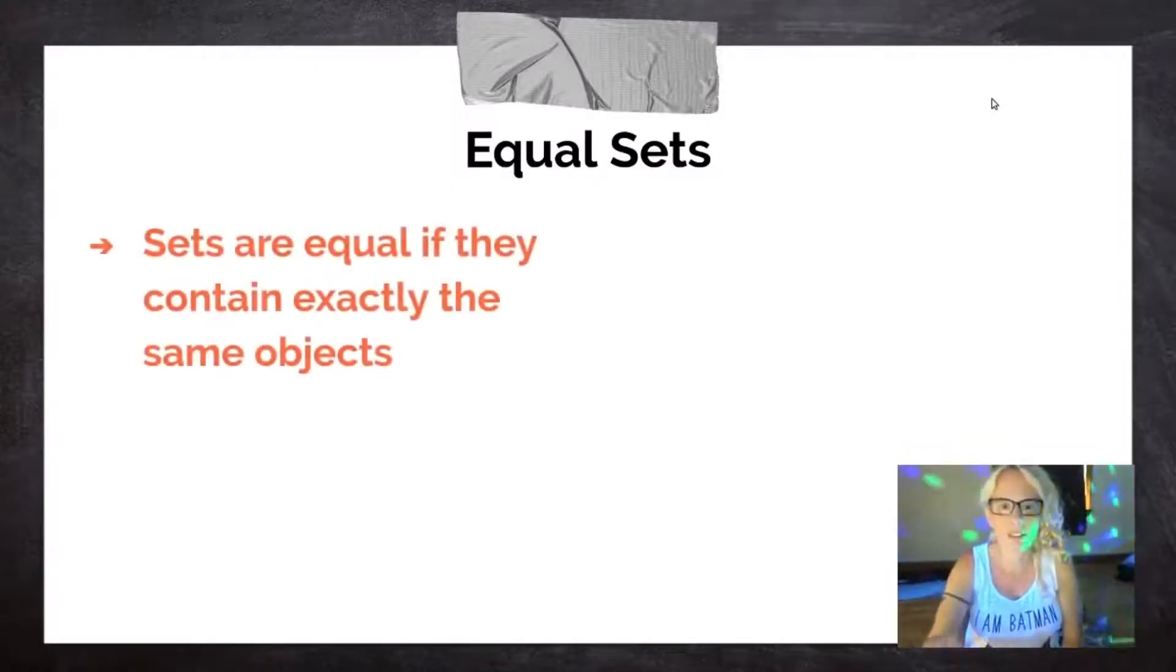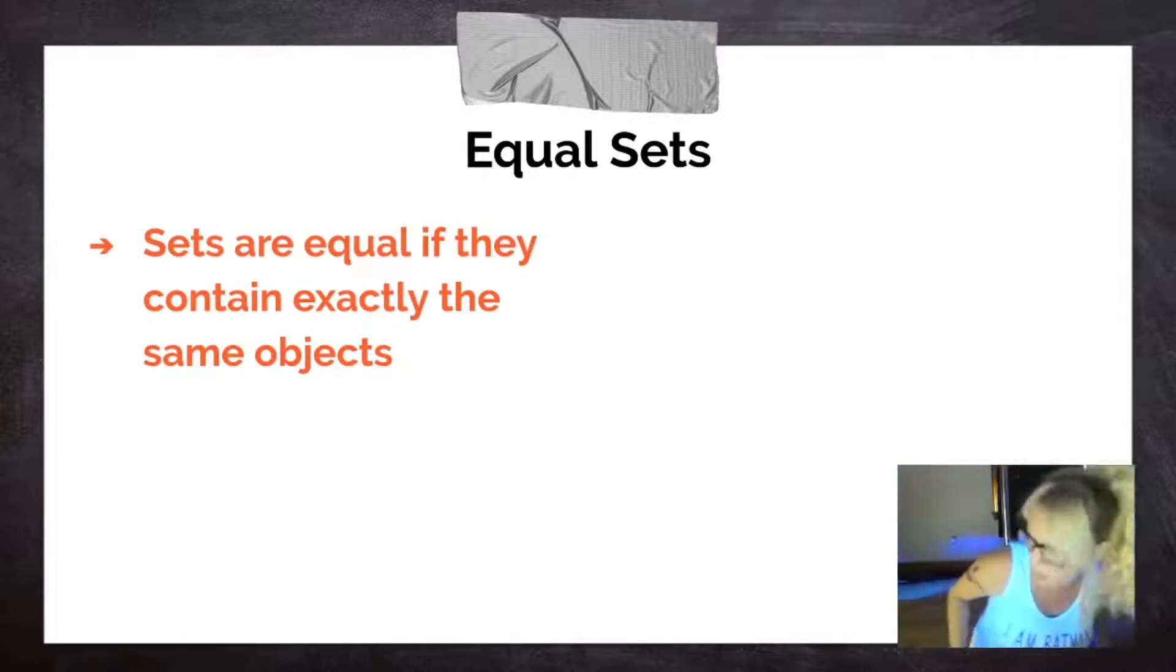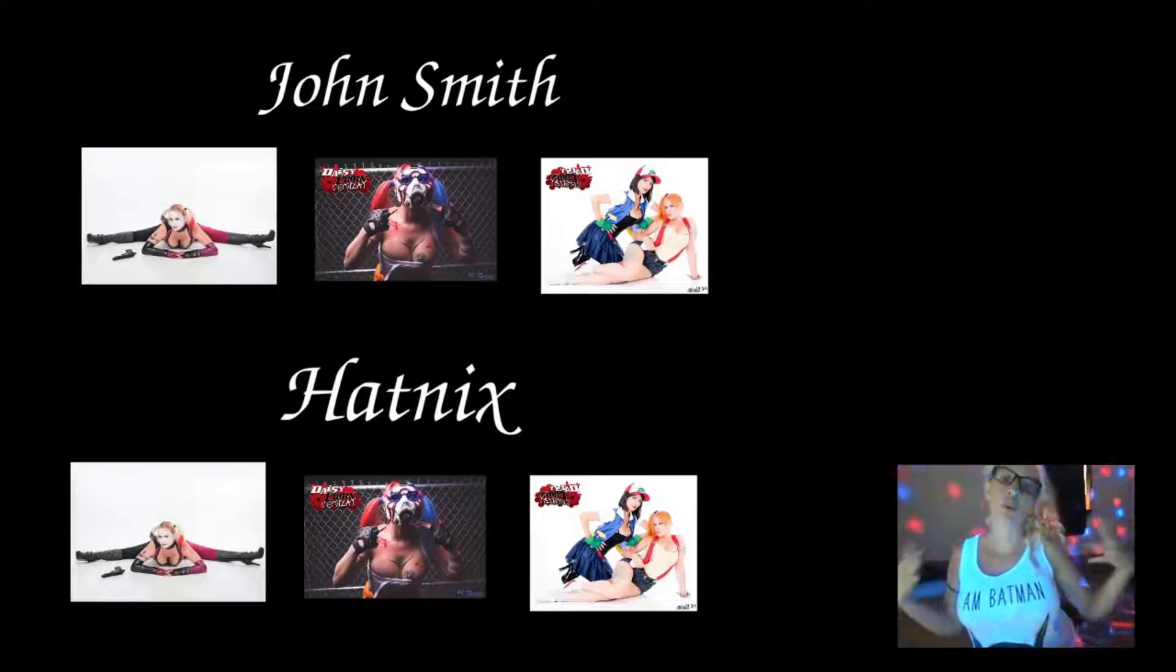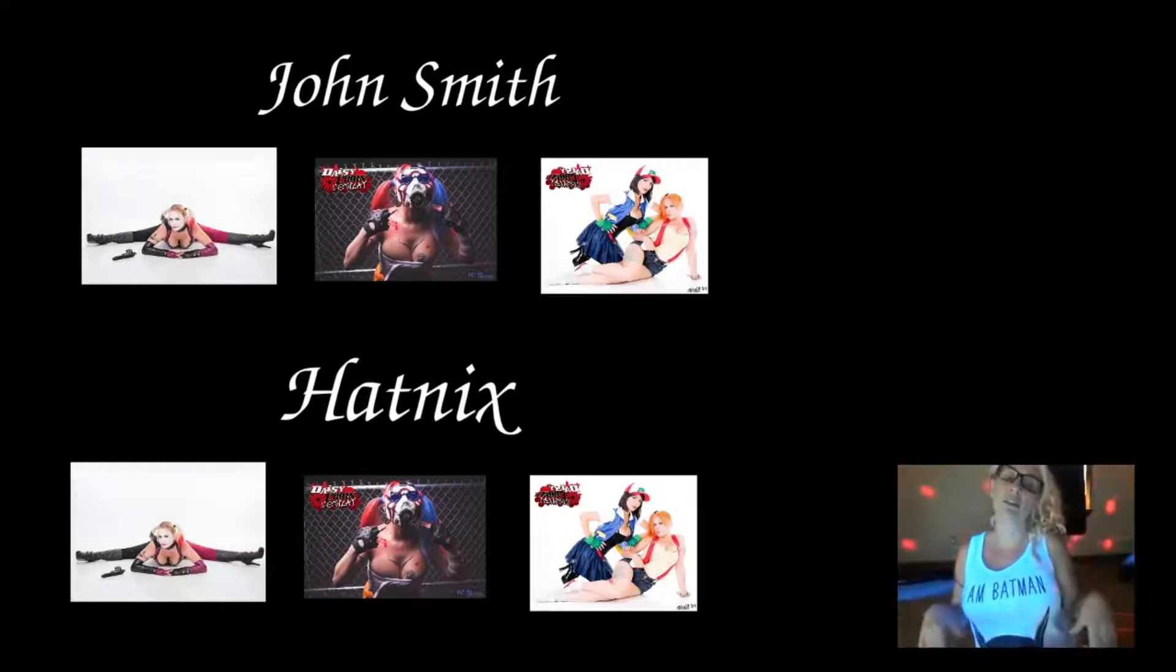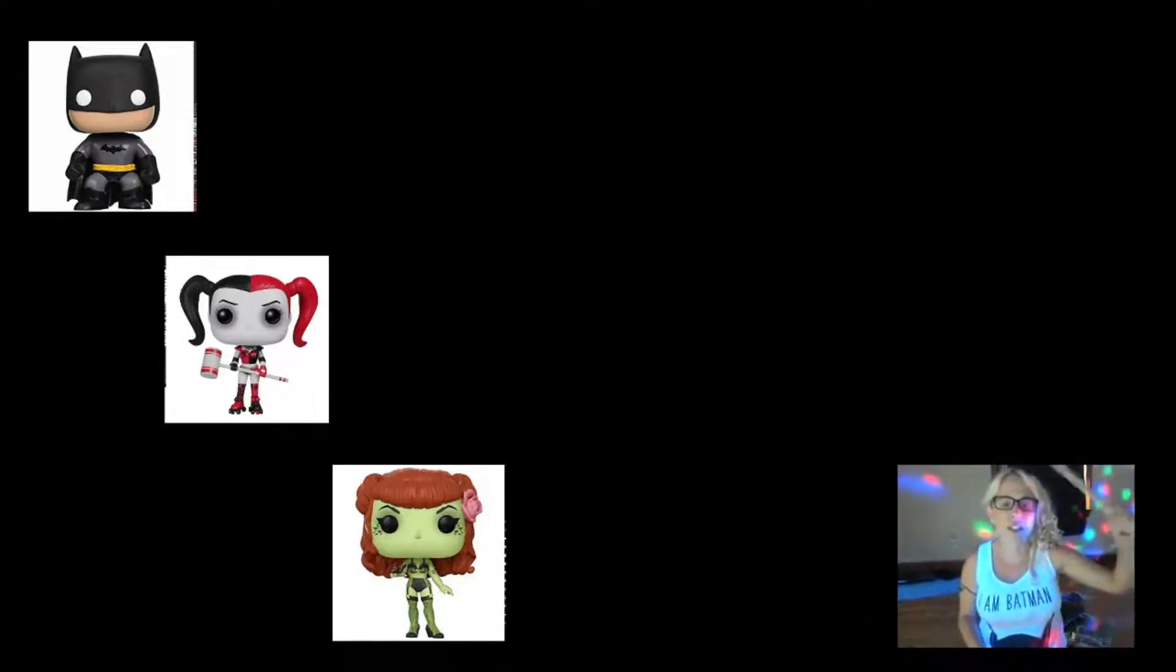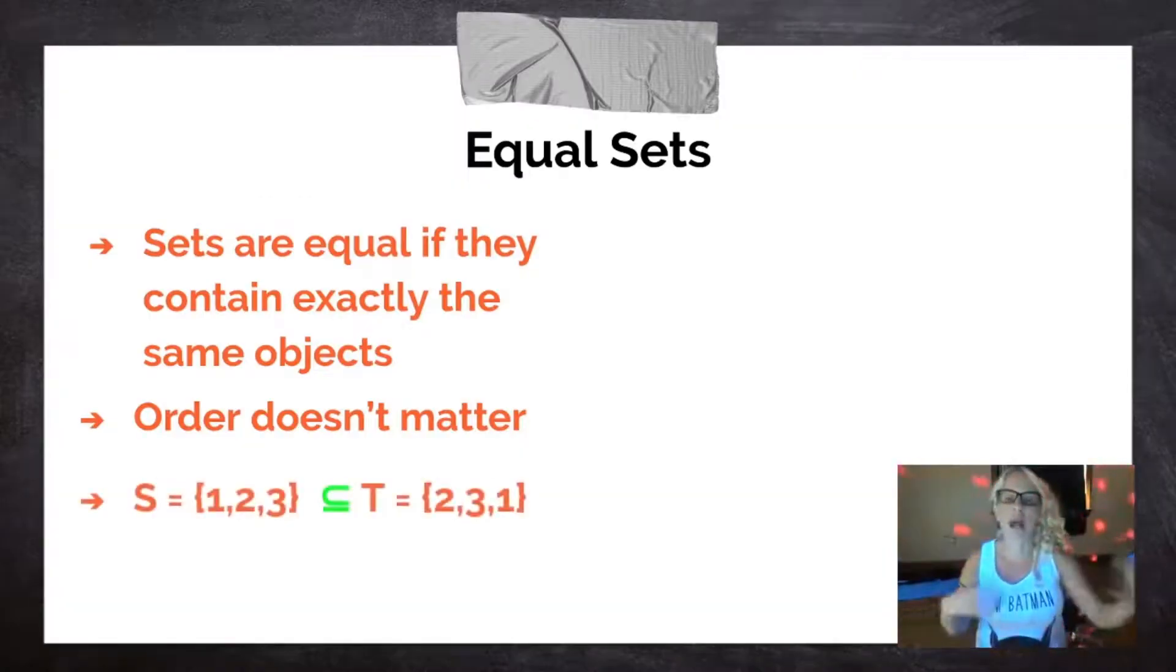So equal sets. What's an equal set? Sets are equal if they contain exactly the same objects. So saying John Smith and Hat Nix own exactly the same number of games, then their gaming collections would be equal sets. I doubt that's true, but if they did own exactly the same games, their gaming collections would be equal sets. And order doesn't matter. If you bought a Batman Funko Pop, a Harley Quinn Funko Pop, and a Poison Ivy Funko Pop, and then Maria bought the exact same three Funko Pops. Maria bought her Batman Funko Pop first, and John Smith bought his Harley Quinn Funko Pop first. It doesn't matter what order they bought them. Order doesn't matter. All that matters is that they contain exactly the same elements.